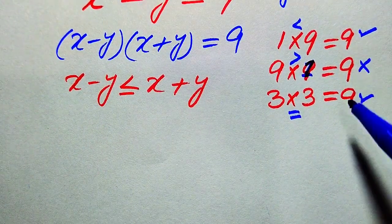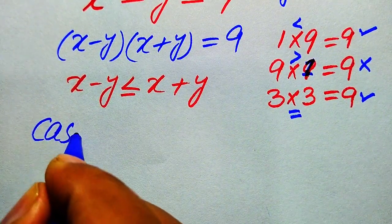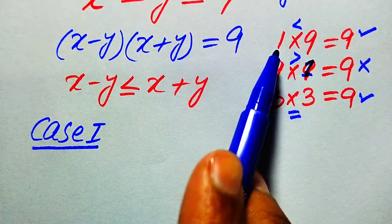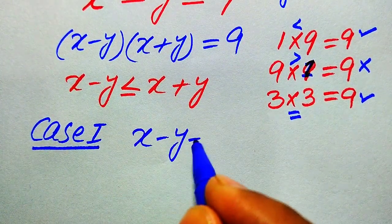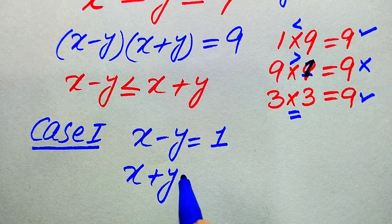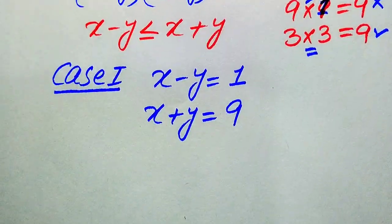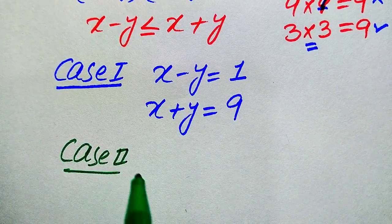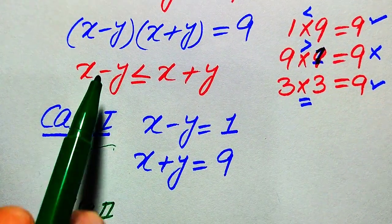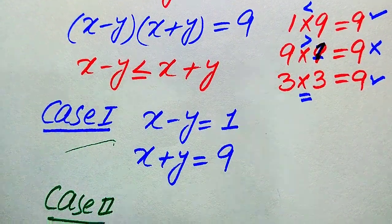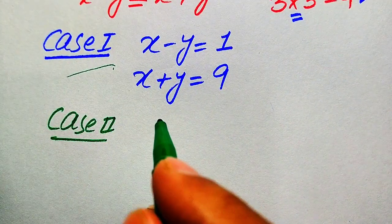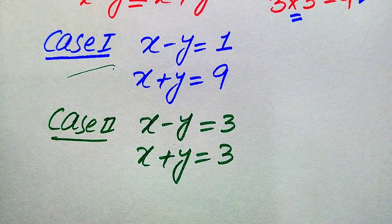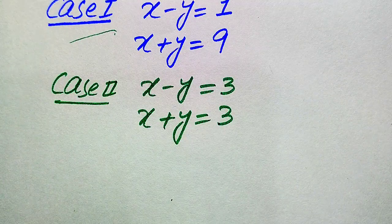We have two valid possibilities, so we convert this into two cases. In Case 1 we compare the two factors with 1 and 9, giving us x minus y equals 1 and x plus y equals 9. In Case 2 we compare both factors with 3 and 3, giving us x minus y equals 3 and x plus y equals 3.